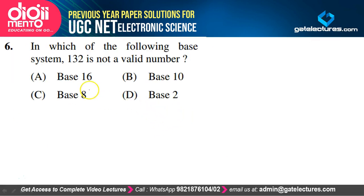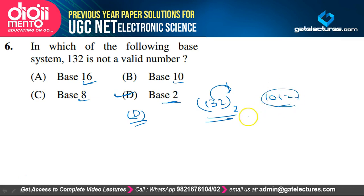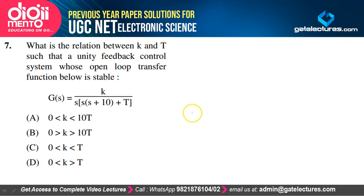In which of the following base systems is 132 not a valid number? In base 16, 132 is valid. In base 10, it is valid. In base 8, it is also valid. But in base 2, 132 is an invalid number — we must replace it with its binary representation in terms of 1s and 0s. So option D is correct.